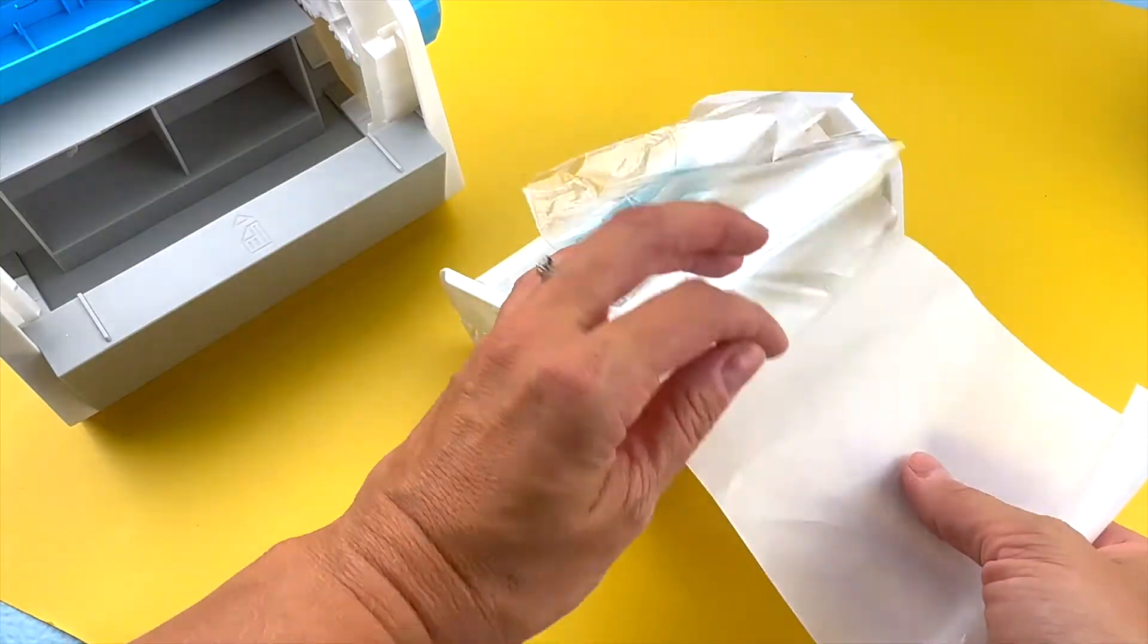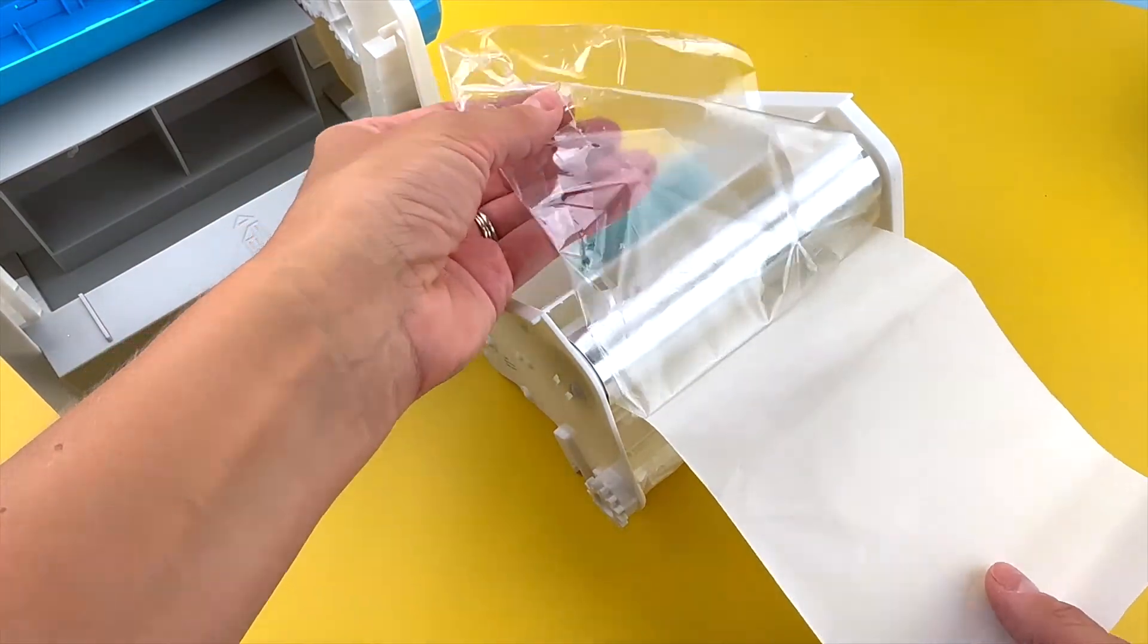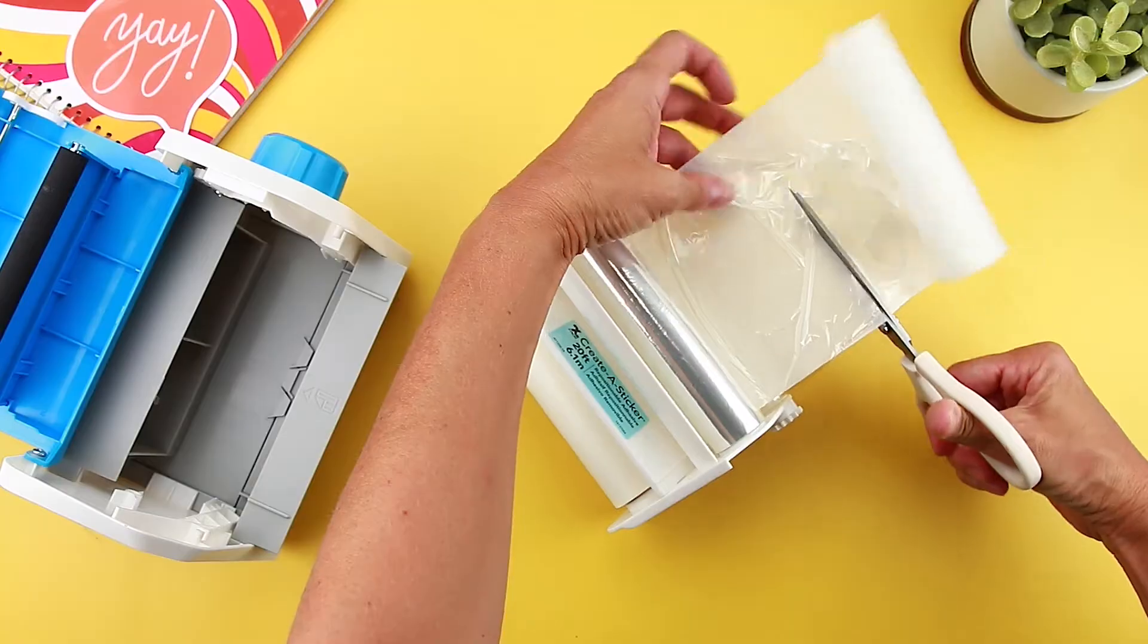First, take the cellophane from the top larger roller and attach it to the white sticker paper. Press it down to make sure it's adhered.